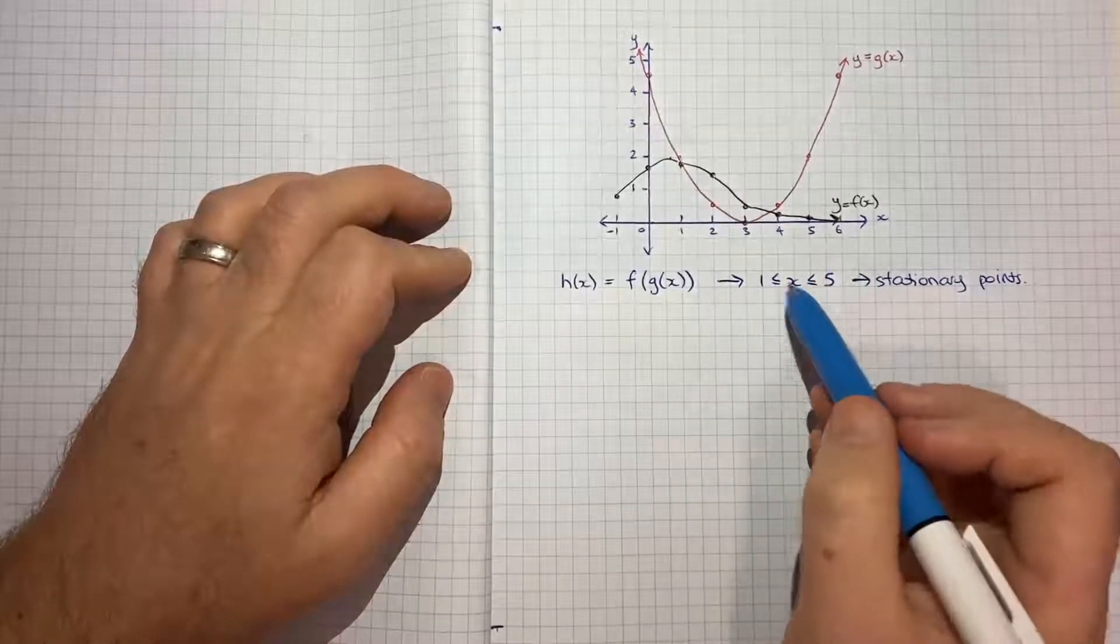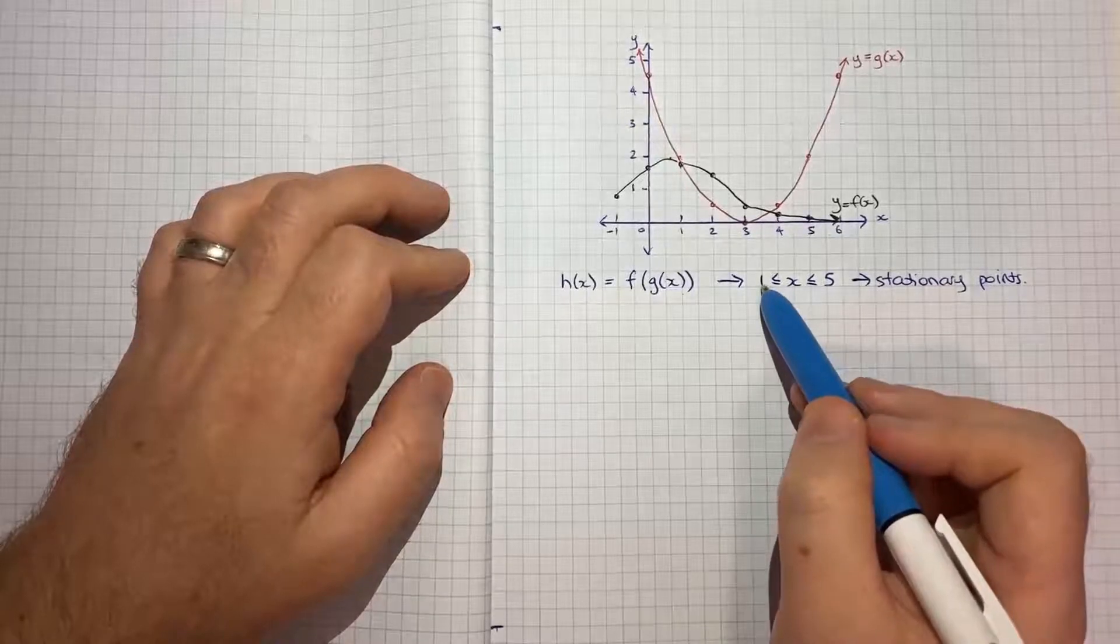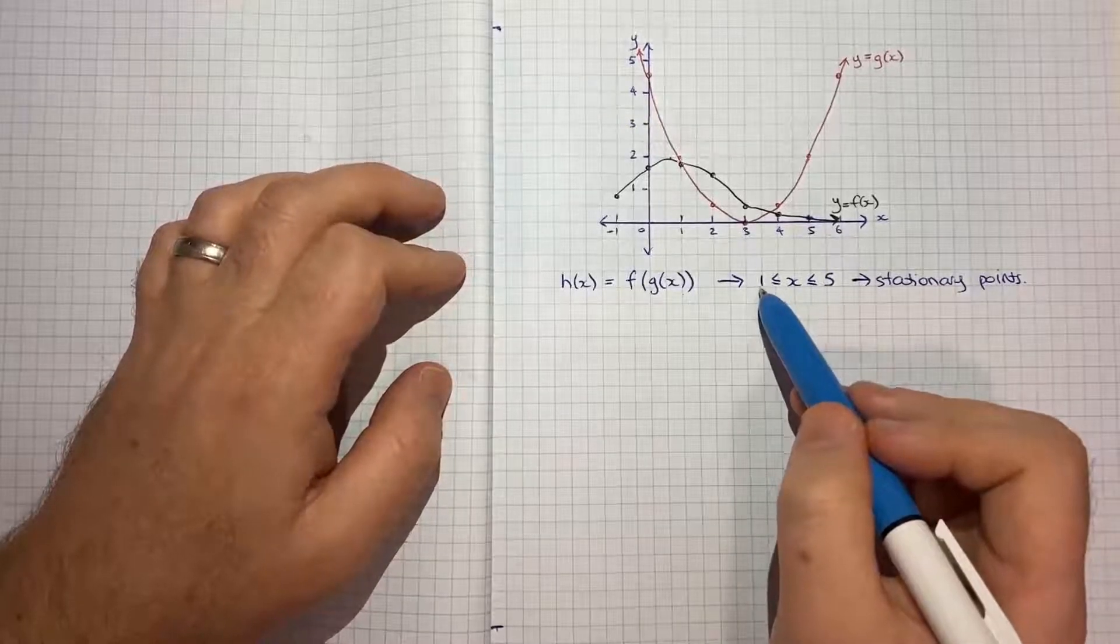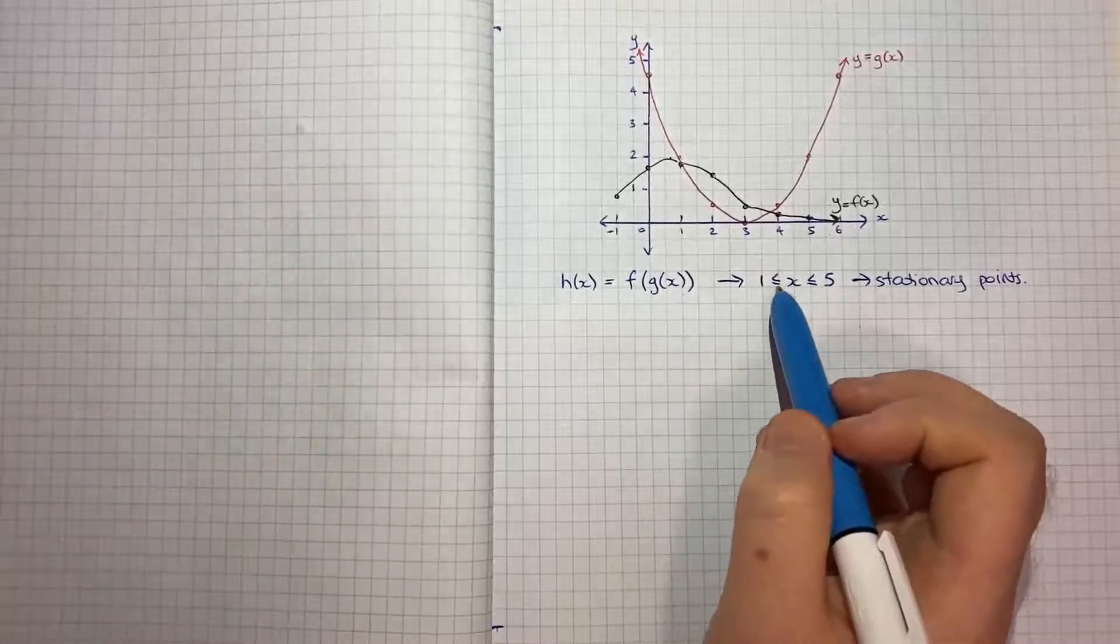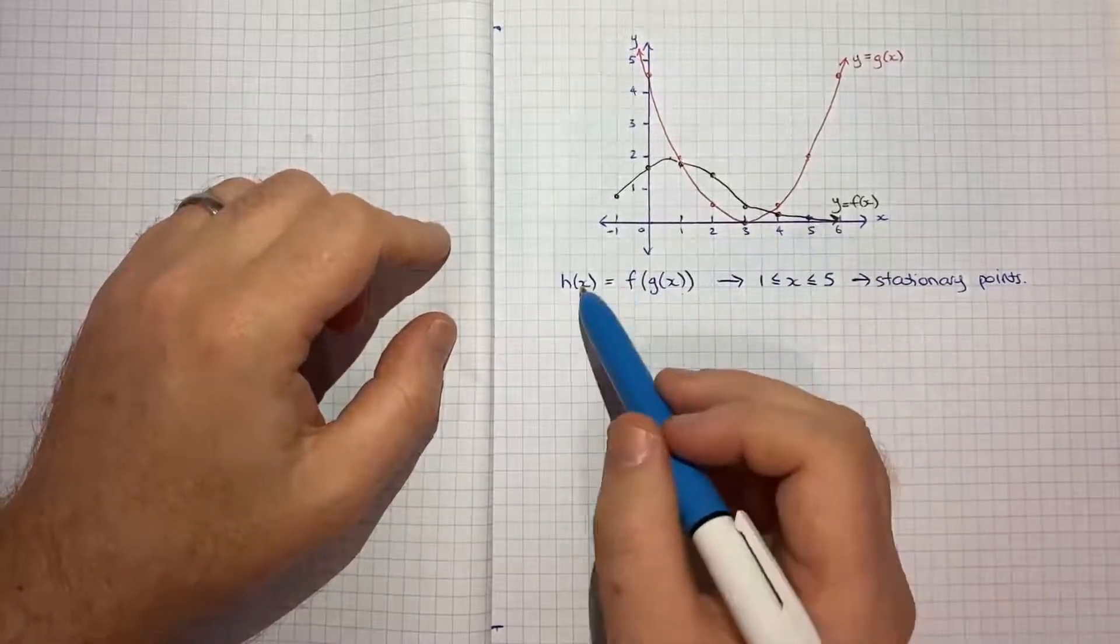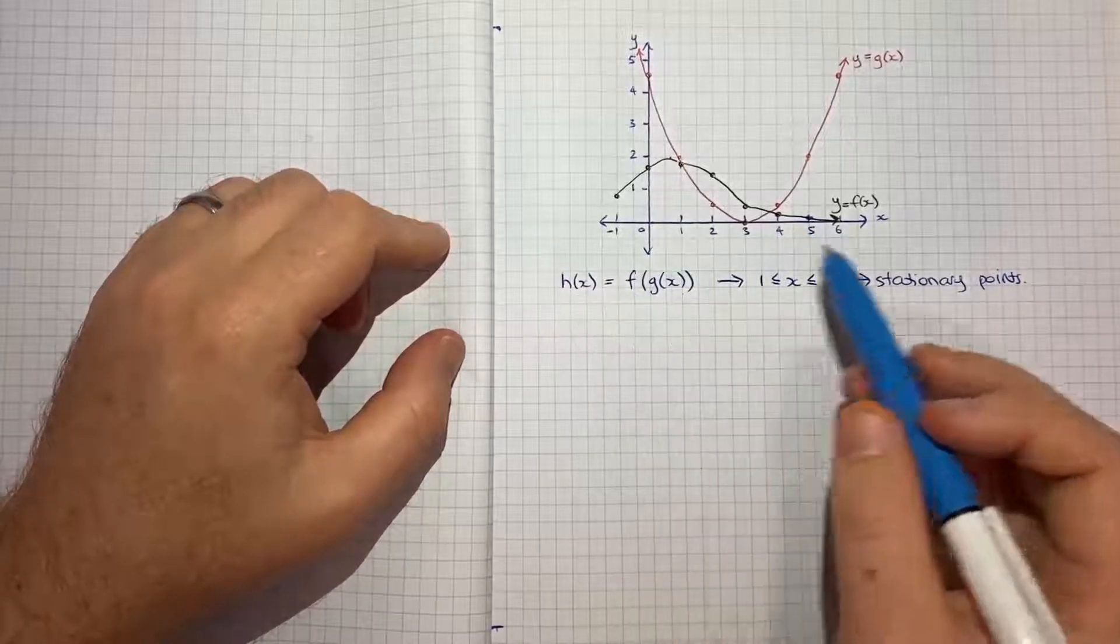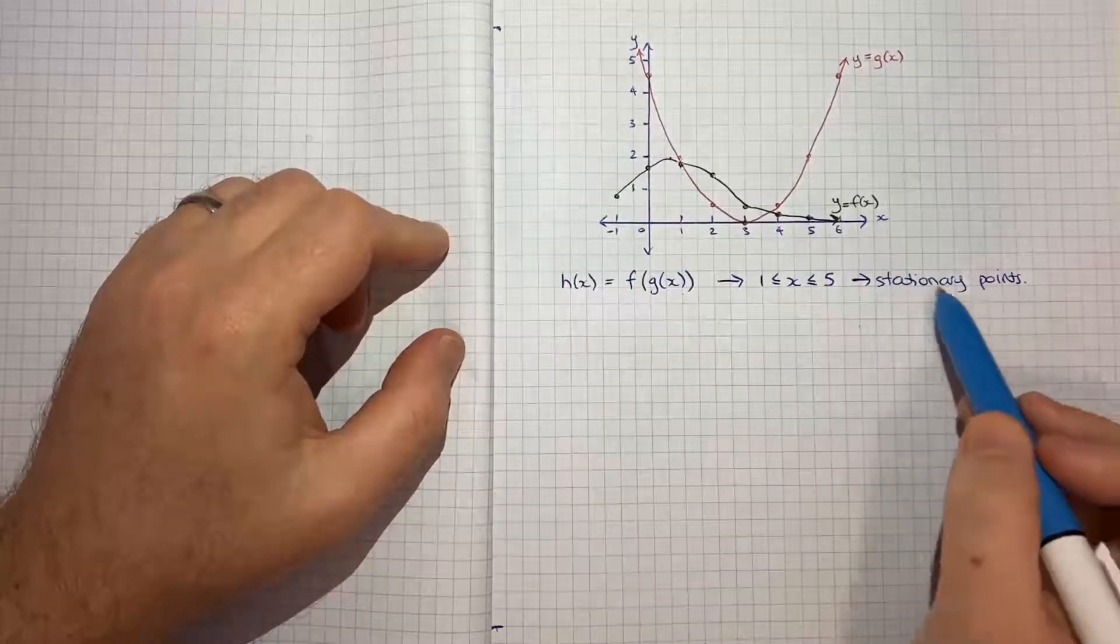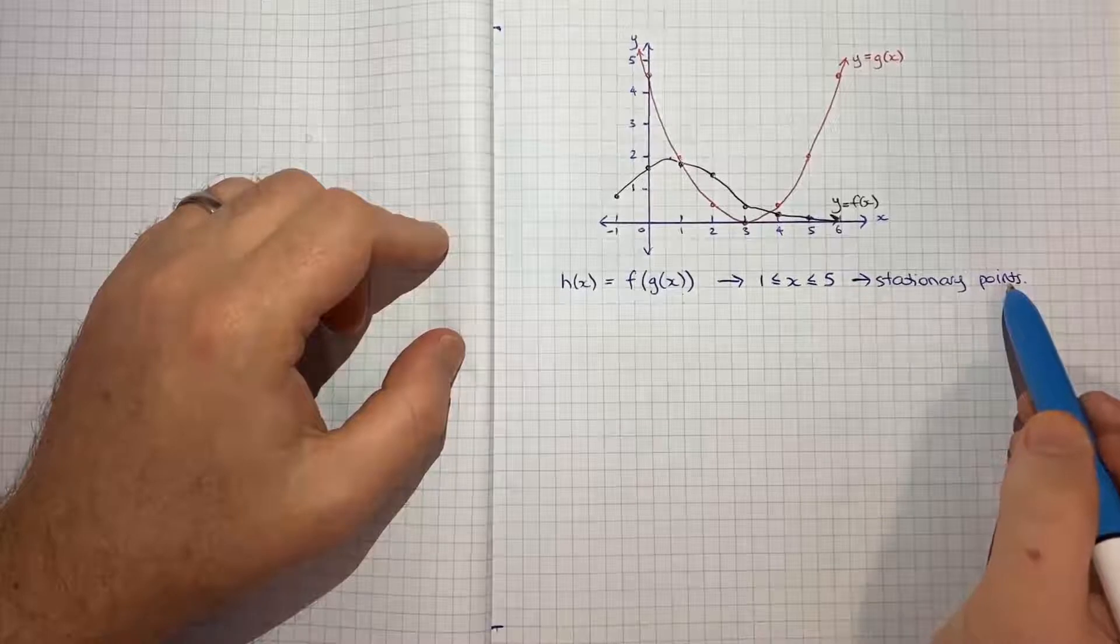And so given we're only concerned between x being between 1 and 5, if we can carry out this process for x being 1, 2, 3, 4, and 5 and then plot h of x, we should then be able to visually inspect where the stationary points are and count them up.